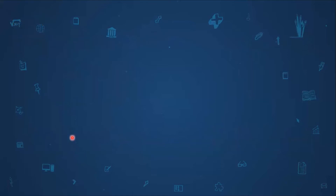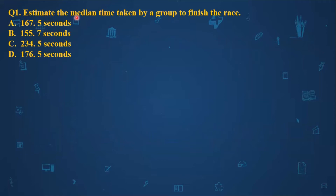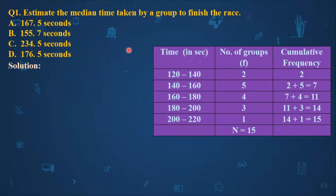The first MCQ asks you to estimate the median time taken by a group to finish the race. You have to find the median of grouped data where the classes are continuous. To find the median, first we must find the cumulative frequency. The column of time and number of groups is already given. The cumulative frequencies are: 2, then 2+5=7, then 7+4=11, then 11+3=14, then 14+1=15. So the total frequency n is equal to 15.